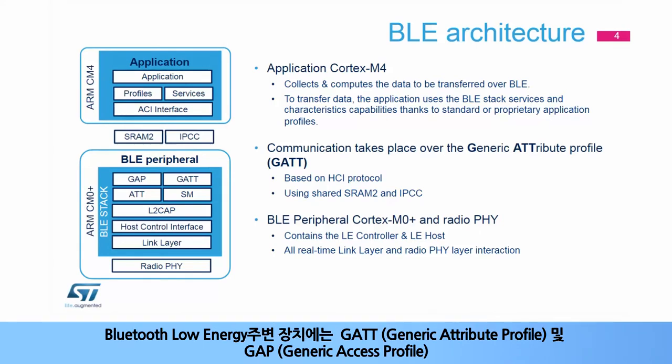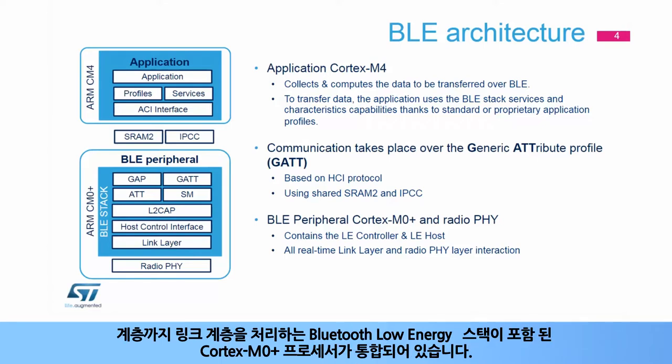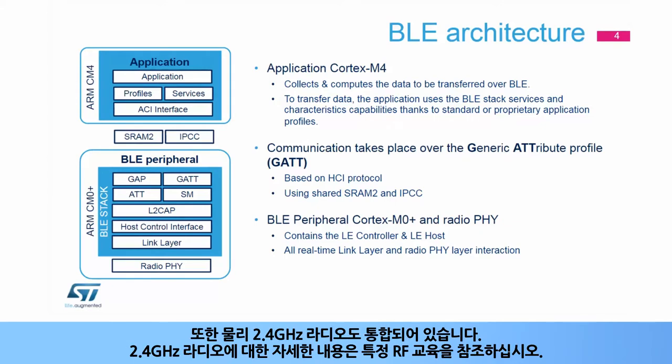The Bluetooth Low Energy peripheral incorporates a Cortex-M0+ processor containing the Bluetooth Low Energy stack handling the link layer up to the Generic Attributes Profiles, or GATT, and Generic Access Profile, or GAP, layers. It also incorporates the physical 2.4 GHz radio. For more information on the 2.4 GHz radio, see the specific RF training.